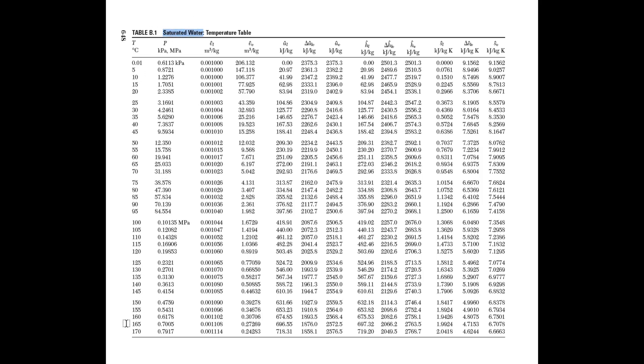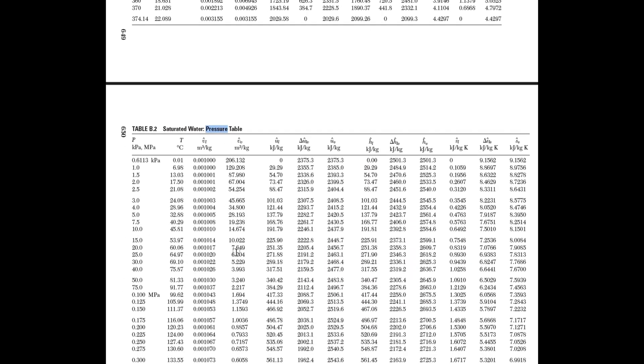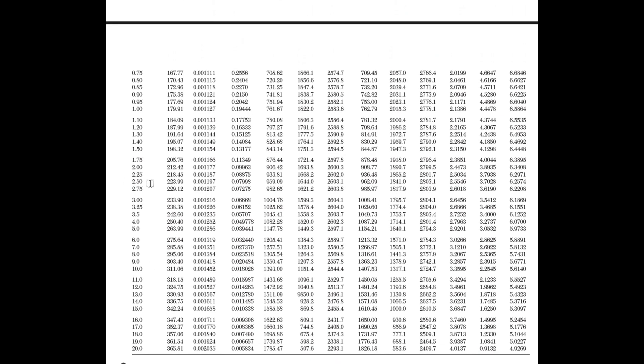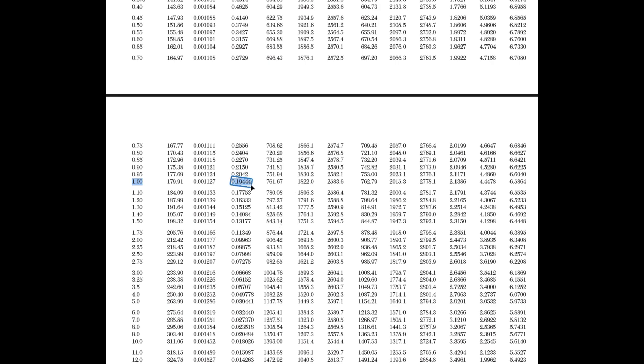We always start at the saturated table. Since pressure is given we look at the pressure table. We go to 1 MPa and first look if the specific volume we calculated is between the liquid and vapor volume. We can see that it is not. The volume is much higher than the vapor volume and thus we know that it is a superheated vapor.